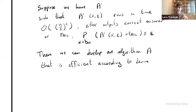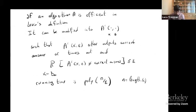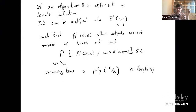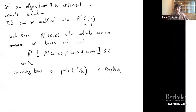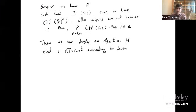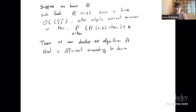Regarding this definition: if something satisfies Levin's definition — the (1/c)-th root of the running time having linear expectation — then you can change it into an algorithm that has fixed polynomial time and inverse-polynomial probability of failure. You can trade off the probability of failure with your running time, and then get an algorithm that is always right and has Levin-type efficiency.